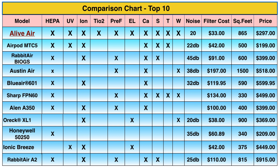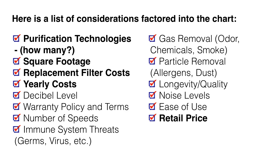The key considerations in this chart — especially the bold ones — are how many technologies each unit has, what square footage it covers, and the replacement filter costs. After about a year's use, filters can cost more than the unit itself, so what seems inexpensive up front may cost more over time. Retail price is also important, of course.